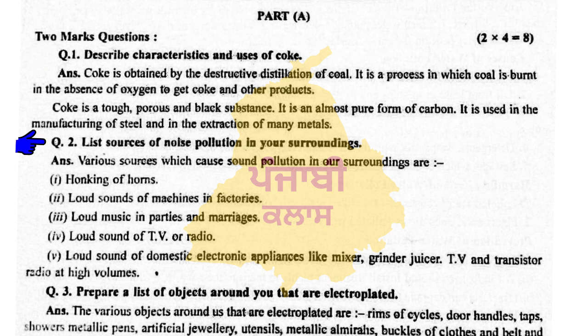Question number two: List sources of noise pollution in your surroundings. Various sources which cause sound pollution in our surroundings are: number one, honking of horns; number two, loud sound of machines in factories; number three, loud music in parties and marriages; number four, loud sound on TV or radio; number five, loud sound of domestic electronic appliances like mixer, grinder, juicer, TV and transistor radio at high volumes.